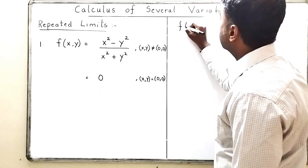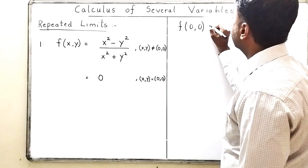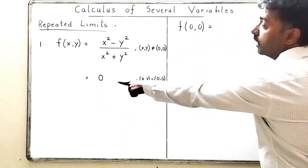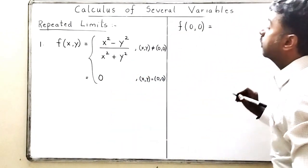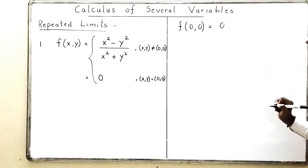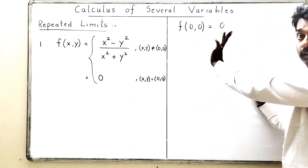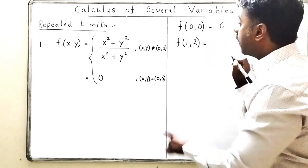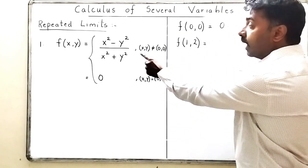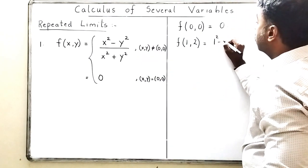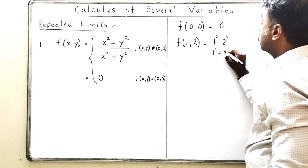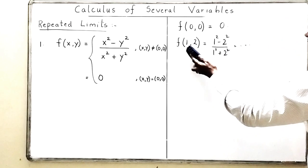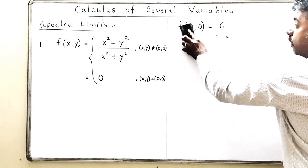From the definition, f(0,0) is given as zero. If instead it were defined as one, then f(0,0) would be one — that is how a piecewise function works. If x and y are not zero, for example f(1,2) = (1² - 2²)/(1² + 2²), and whatever that fraction comes out to is the answer.